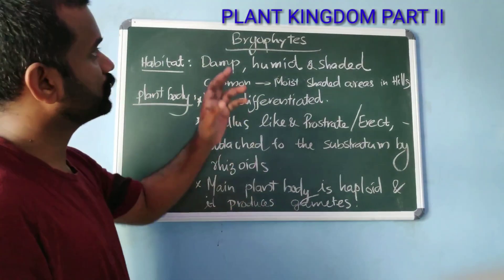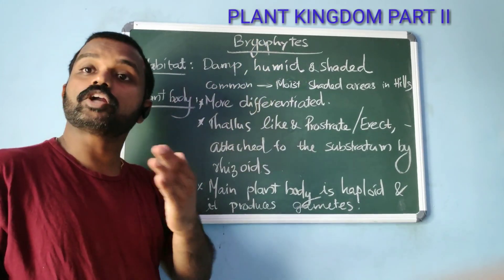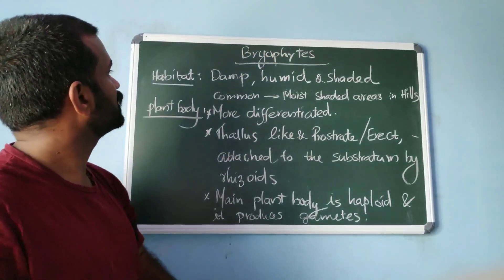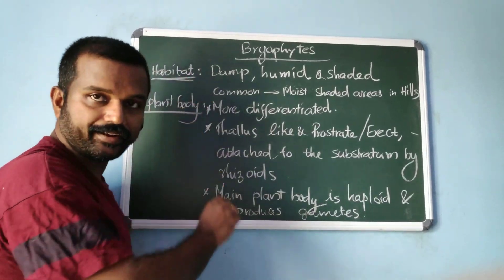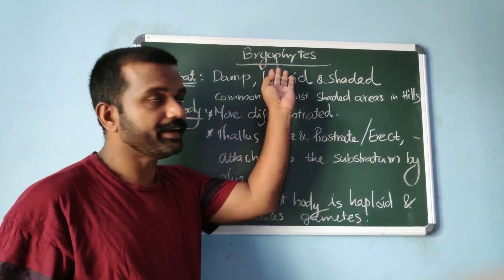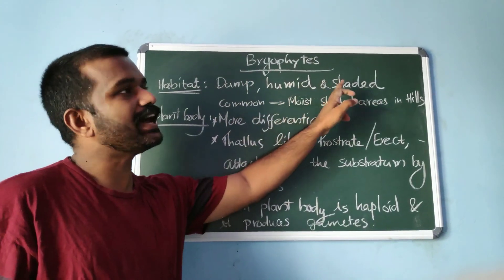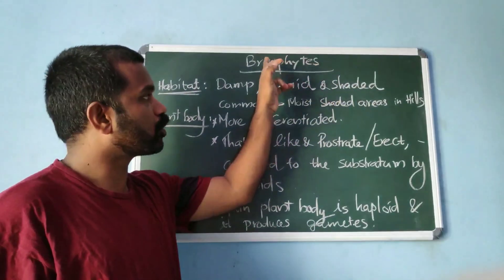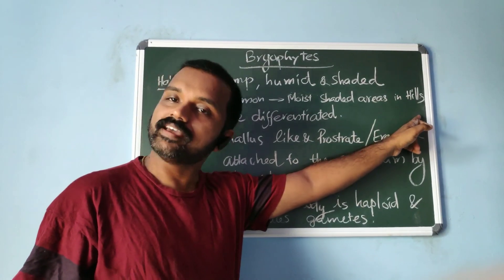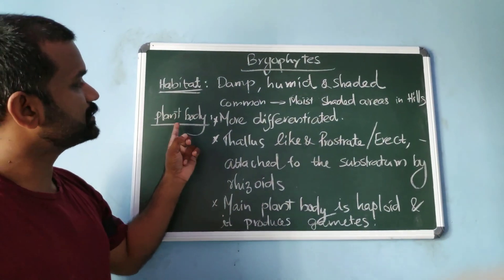Students, in this video we will see Plant Kingdom Part 2, that starts with Bryophytes. First, about its habitat: the habitat of Bryophytes includes damp, humid and shaded localities. They are commonly found in moist shaded areas in the hills.